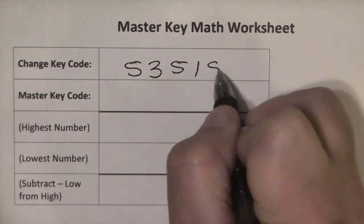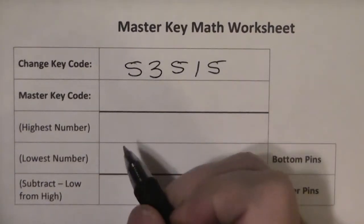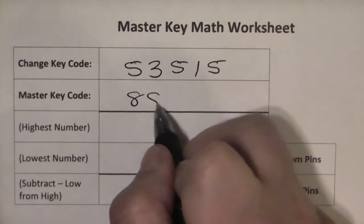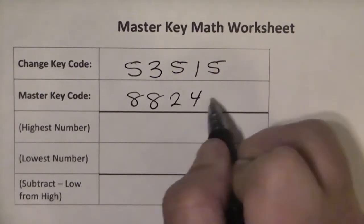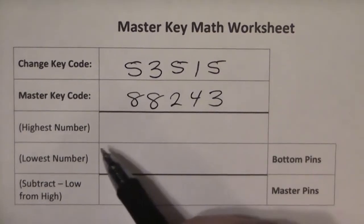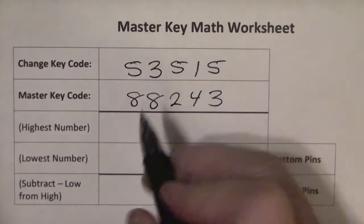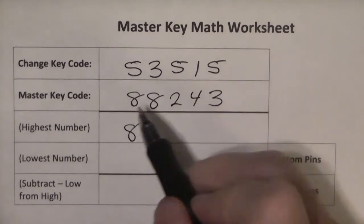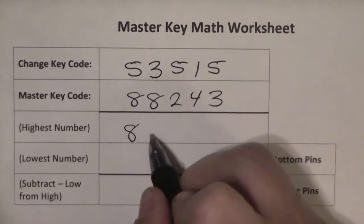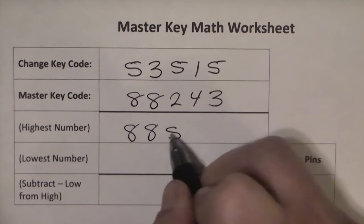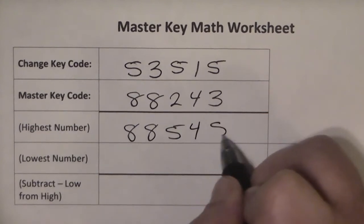For this example, we will use the change key code of 53515 and the master code of 88243. The next step is comparing the two numbers and writing down the highest number. In the first column, 8 is higher than 5, 8 is higher than 3, 5 would be the next number, then 4 and 5.